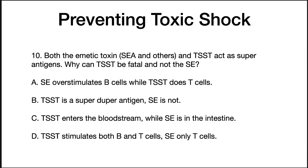That brings up a question: both the emetic toxin, called SEA, and TSST act as superantigens. Why can TSST be fatal and not the emetic toxin? The correct answer is location, location, location. Because the emetic toxin is in the intestines and doesn't penetrate into the bloodstream, it can't overstimulate the immune system as much. TSST does move into the bloodstream and cause its effect.